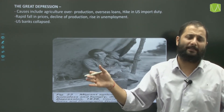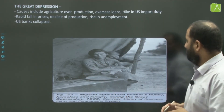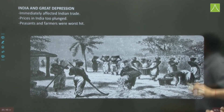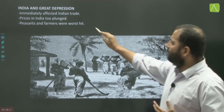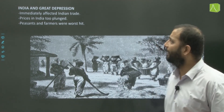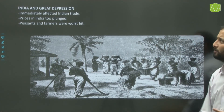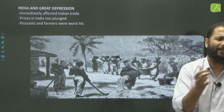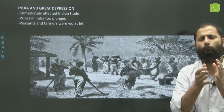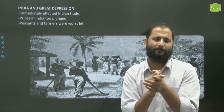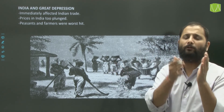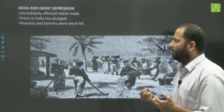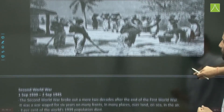The Great Depression immediately affected Indian trade. Prices in India too plunged and peasants and farmers were the worst hit. However, people with steady jobs, those living in cities, or house owners were not as badly affected because they had a regular source of income.